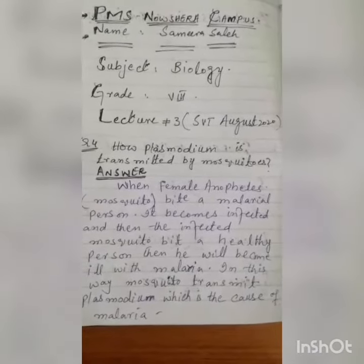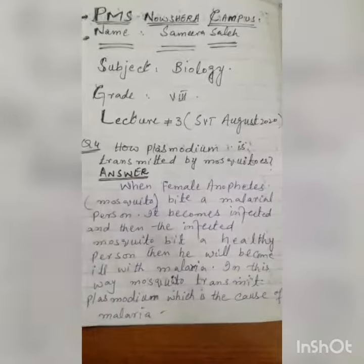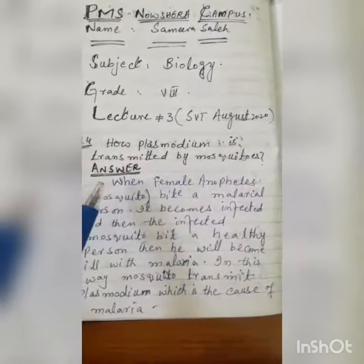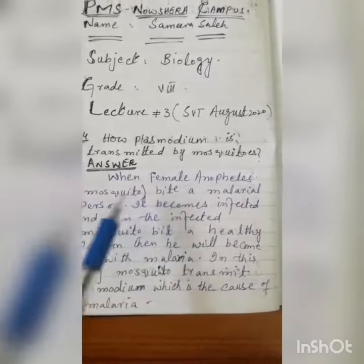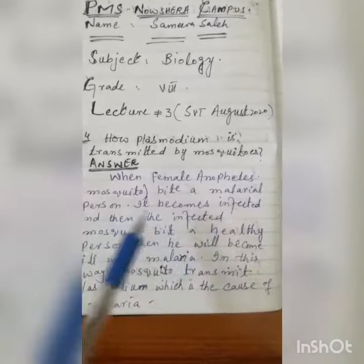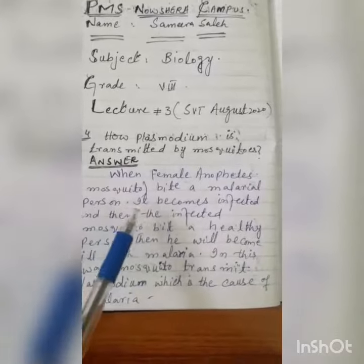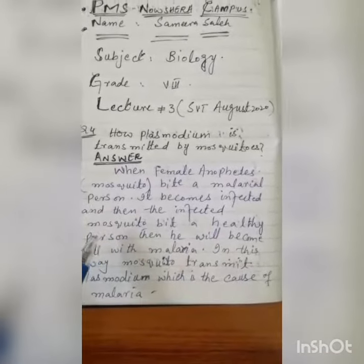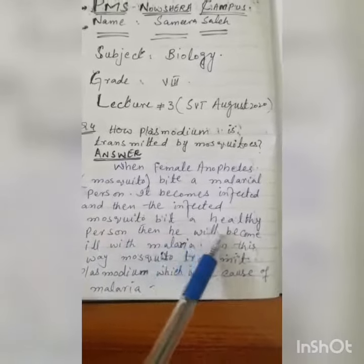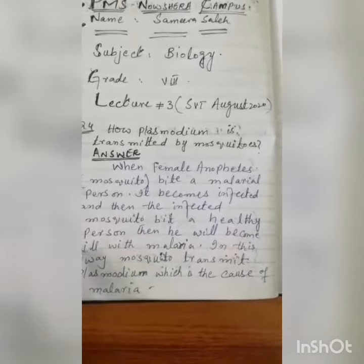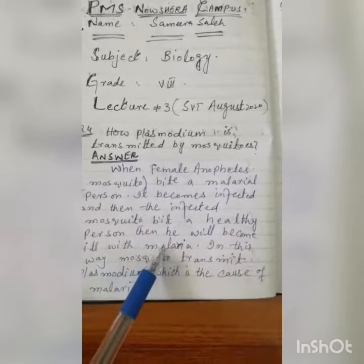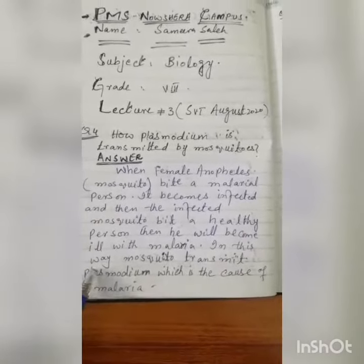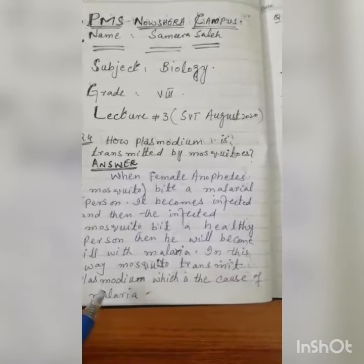Today we will do Question No. 4: How is Plasmodium transmitted by Mosquito? The answer is: when a female Anopheles Mosquito bites a malarial person, it becomes infected. Then the infected Mosquito bites a healthy person, and that person will become ill with Malaria. In this way, the Mosquito transmits Plasmodium, which is the cause of Malaria.